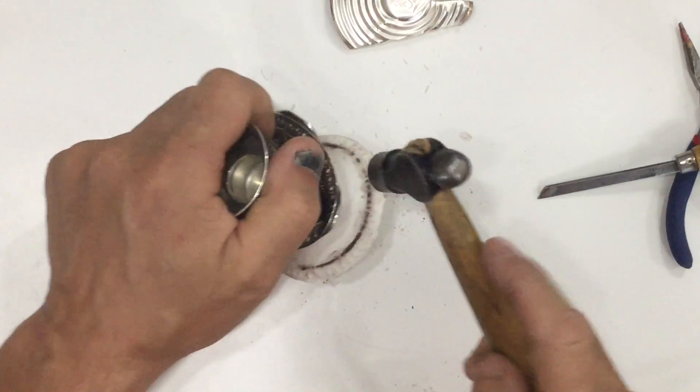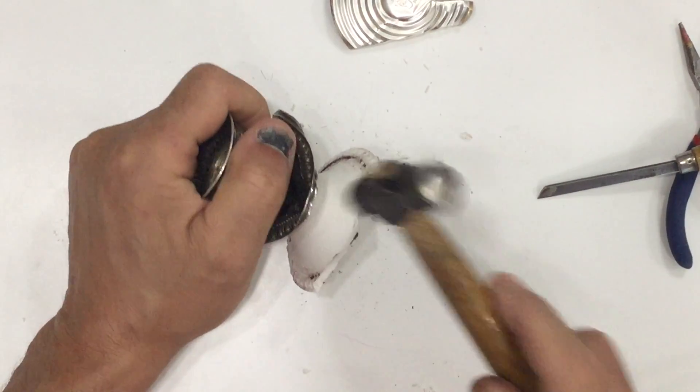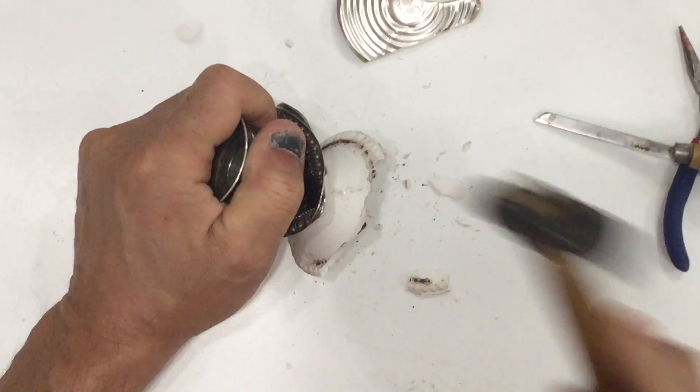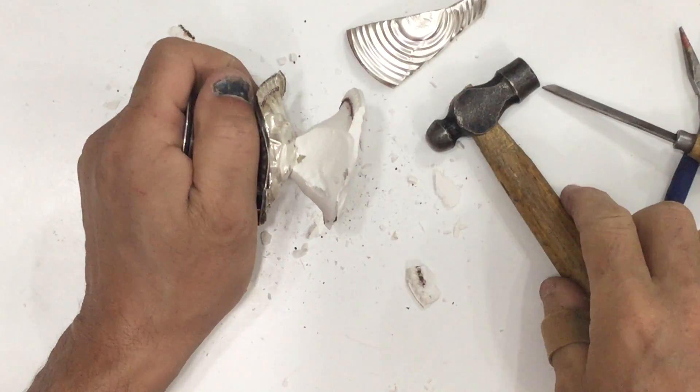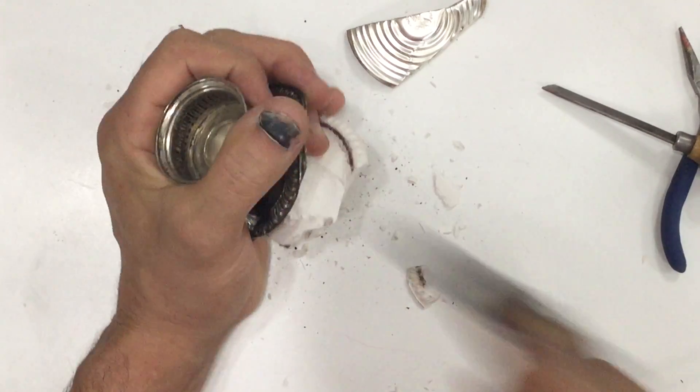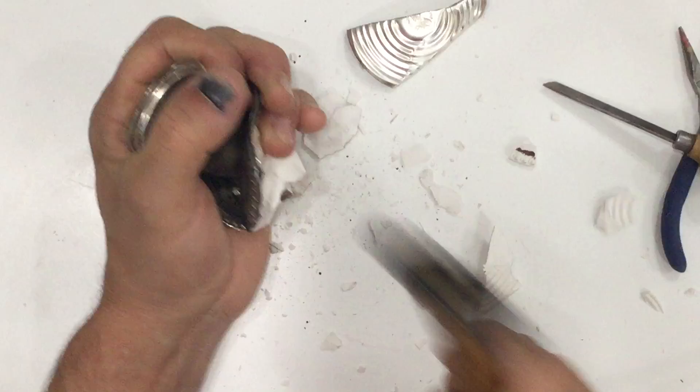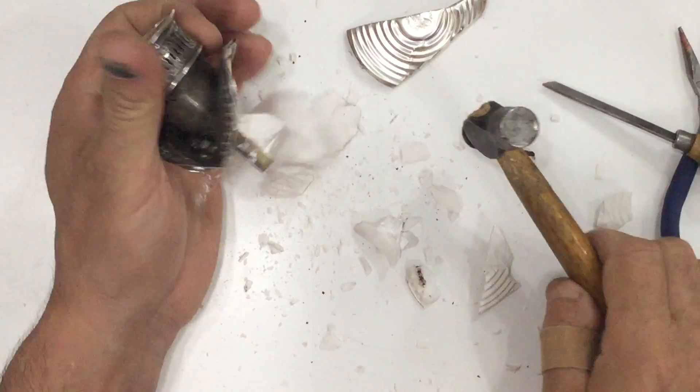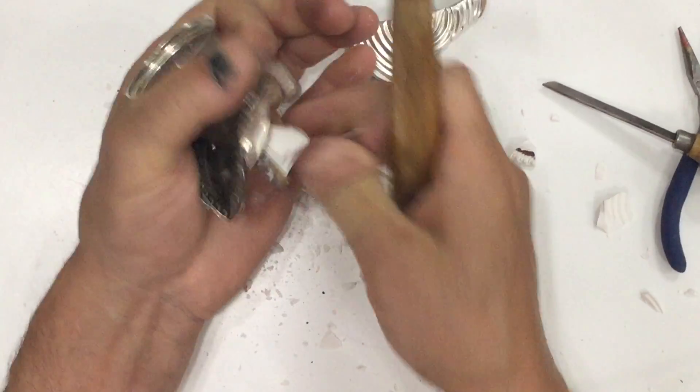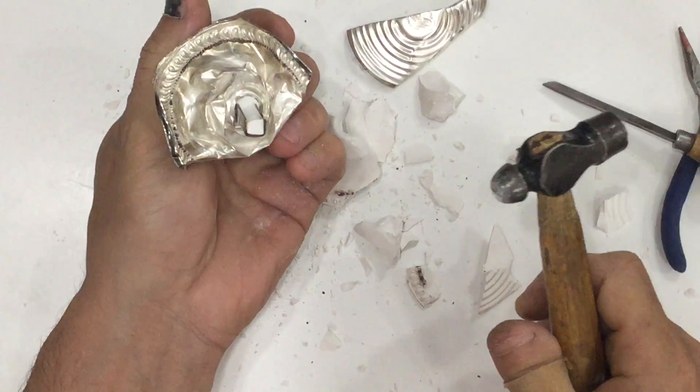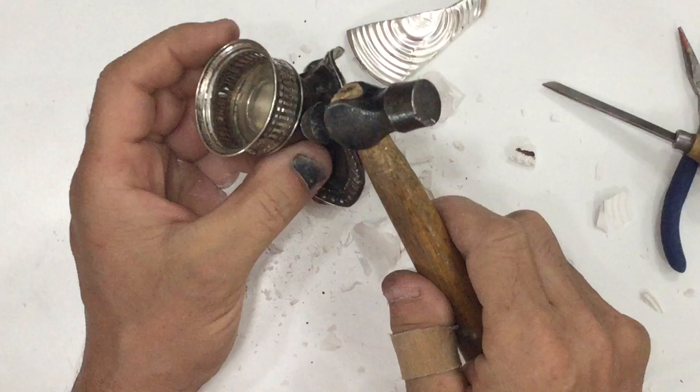There it is, you can just see it in the middle there. This one's brass, so that just goes all the way through and goes into more of this plastery material.